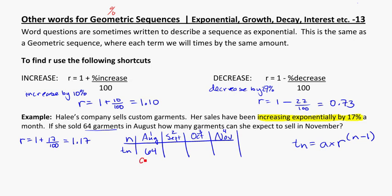So that tells me that A is equal to 64, because it's the first term. And N in this case, because I'm looking for November, that's the fourth term, one, two, three, four. So N will equal four. So I've got R, A, and N. I can use my formula.